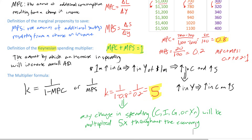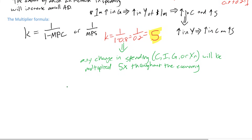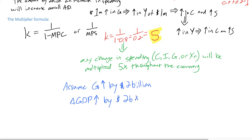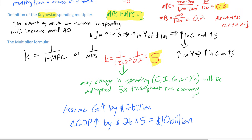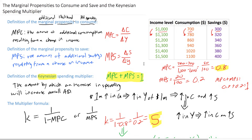The ultimate change in real GDP in a country that experiences an initial change in spending of X dollars will be five times X. For example, if government spending increases by two billion dollars, this will lead to a change in GDP of two billion times five, or ten billion dollars. We'll walk through more examples of how the multiplier works and how it can be illustrated using an AD-AS diagram in our next video.